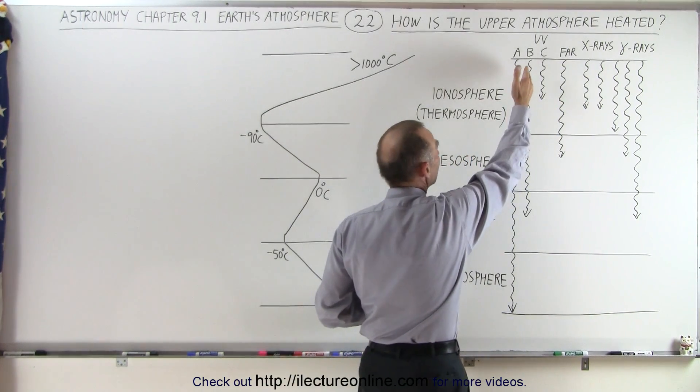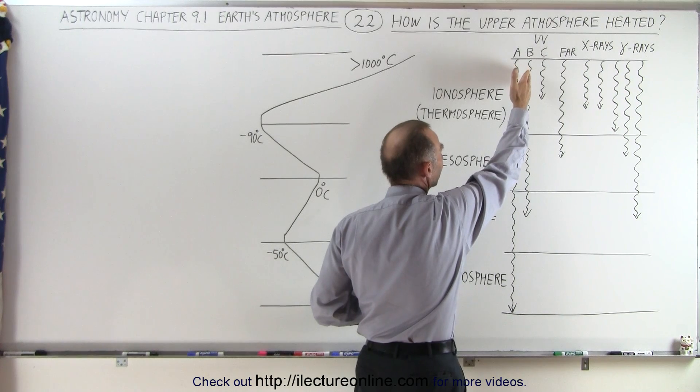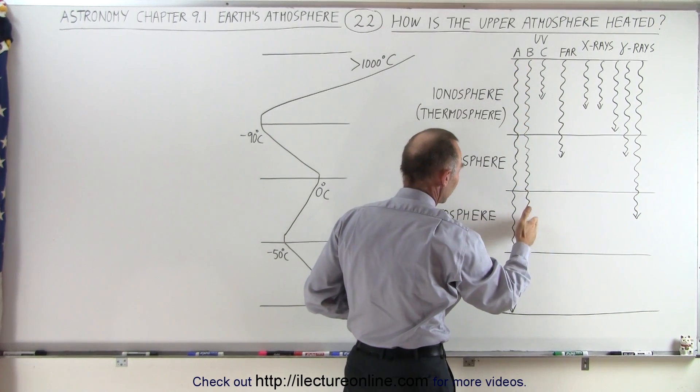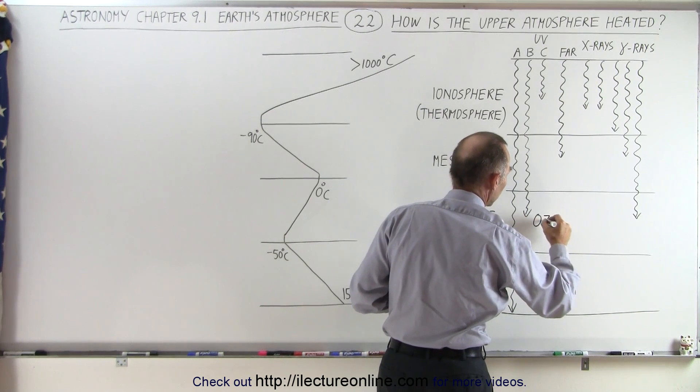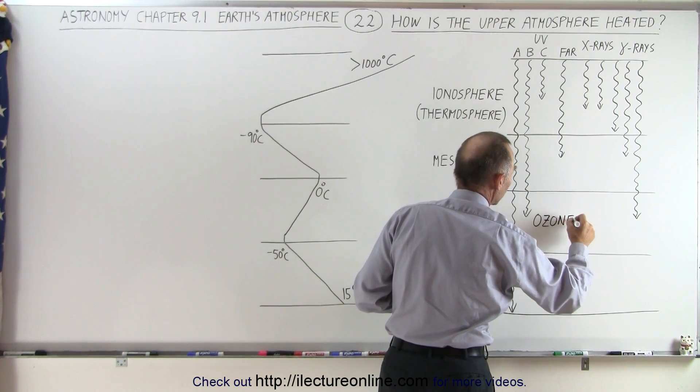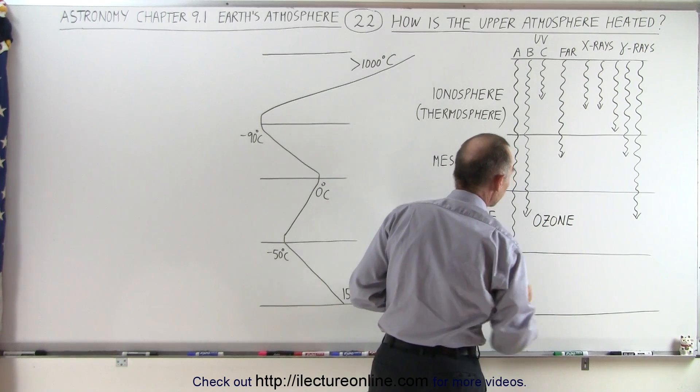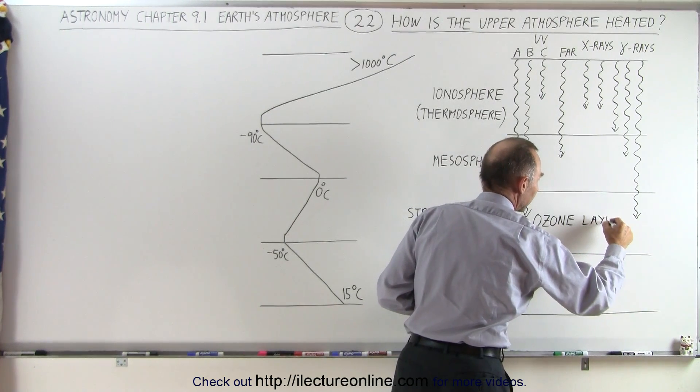We know that the UVB rays, they come all the way through and they're finally stopped in the stratosphere because of the ozone layer. So there's an ozone layer here which is able to stop the UVB radiation. So let's go ahead and put ozone layer down here.